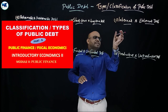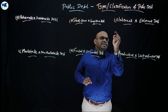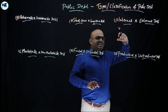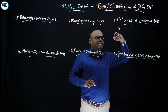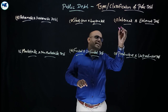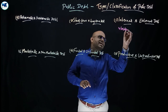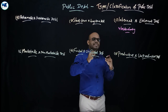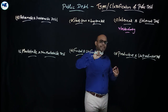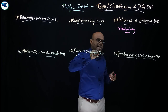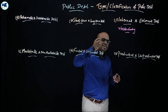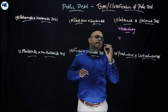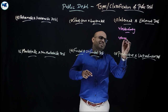First, internal debt — the term itself indicates the meaning. Internal debt is floated inside the country. The government raises the fund inside the country, within the country. For example, the government takes loans from individuals, companies, business entities, or commercial banks located inside the country. The loan is raised in the form of domestic currency.